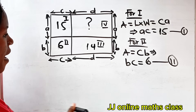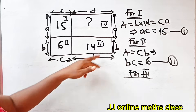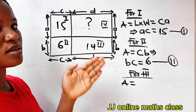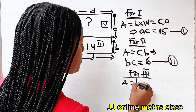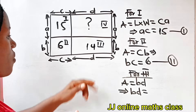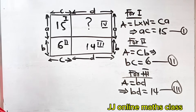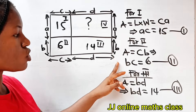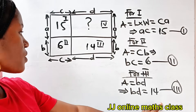For rectangle III, the area is equal to length times width, which is D times B, or BD. So this implies that BD is equal to 14. Let's call this equation 3. So we have: equation 1: AC = 15; equation 2: BC = 6; equation 3: BD = 14.